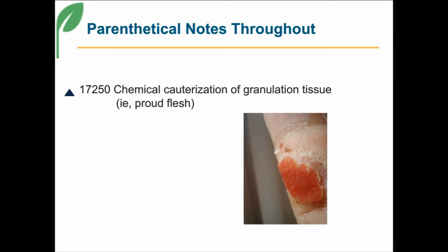Code 17250 in the integumentary system is really good for chemical cauterization of granulation tissue. Now this code has a triangle in front of it, which means it's been revised. So I looked and said, well, what's the difference between last year's code and this year's code?